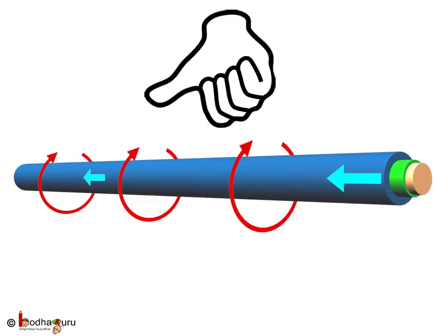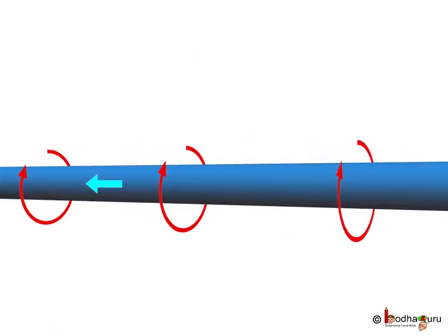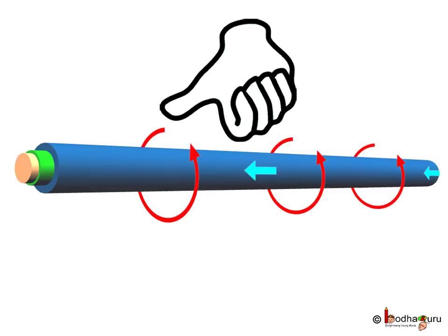Now, when we view from the left side, the finger seems to be wrapping in anti-clockwise direction. Actually, the direction of magnetic field remains the same but our angle of view changes.